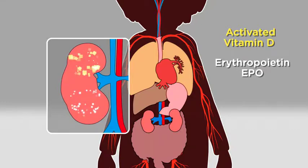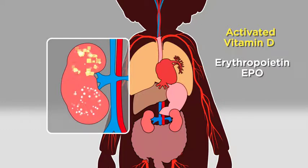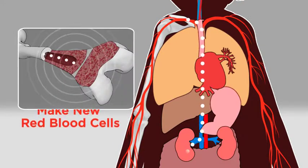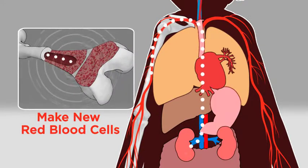The other hormone made in the kidney, EPO, plays a key role in preventing anemia. EPO produced in the kidneys travels to the bones and tells your bone marrow to make new red blood cells.